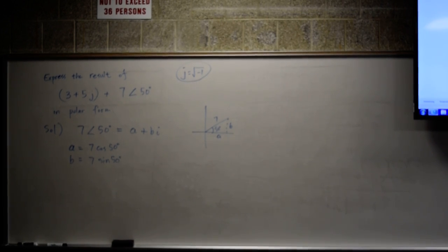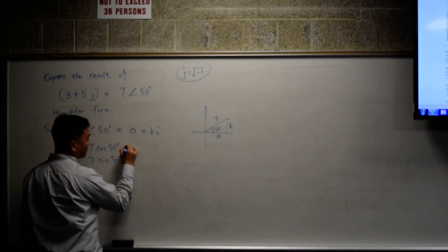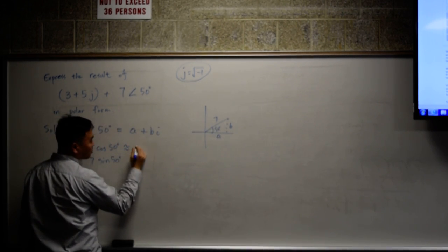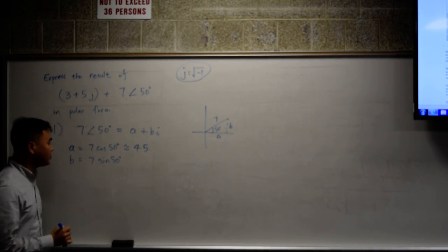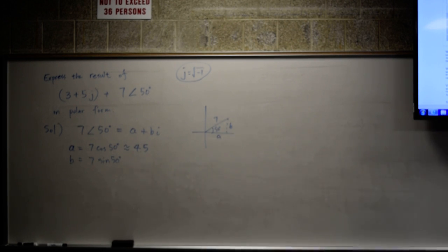Let's use the computer to change it. So what is 7 times cosine of 50 degrees? It's 4.499. So it's safe to say it's about 4.5. What's 7 sine 50 then? 7 sine 50 degrees. It's 5.36.